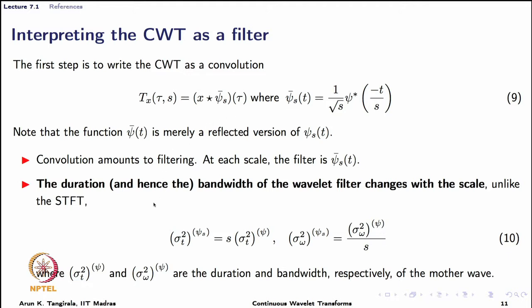The most important feature of this filter is that the duration and bandwidth change with scale, unlike in the short time Fourier transform. The squared duration of the wavelet is related to the duration of the mother wave through scaling parameter s, and the bandwidth of the wavelet is 1 over s times the bandwidth of the mother wave. This means as we stretch the wavelet, the bandwidth becomes narrower but the duration becomes longer, and vice versa when compressed.